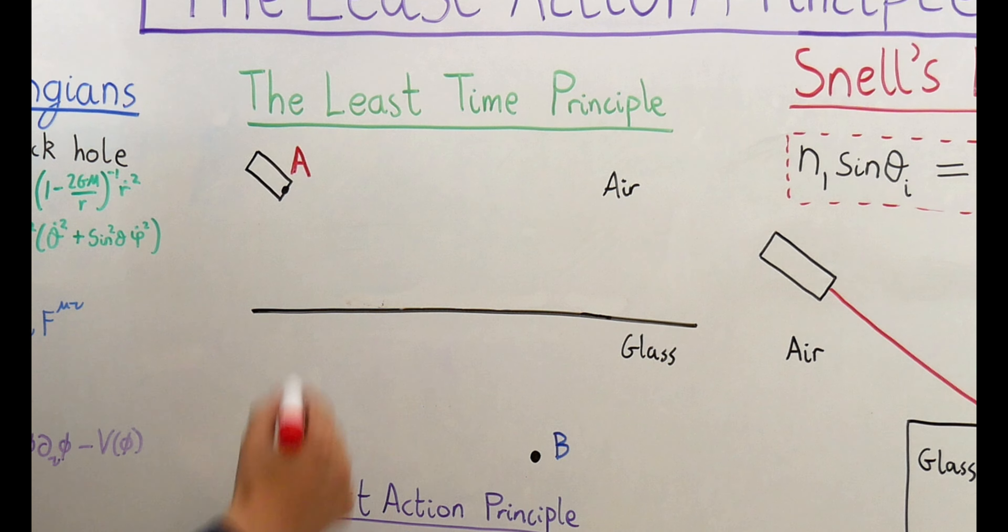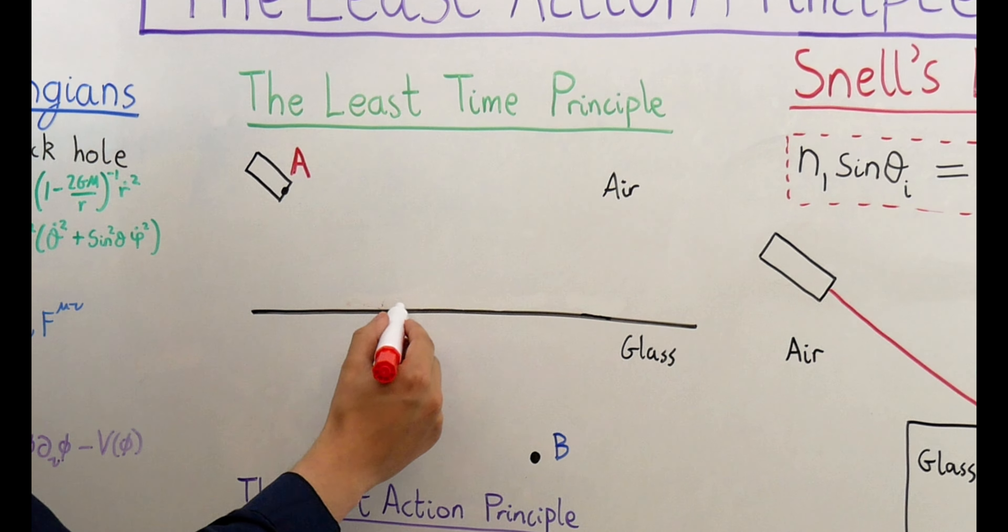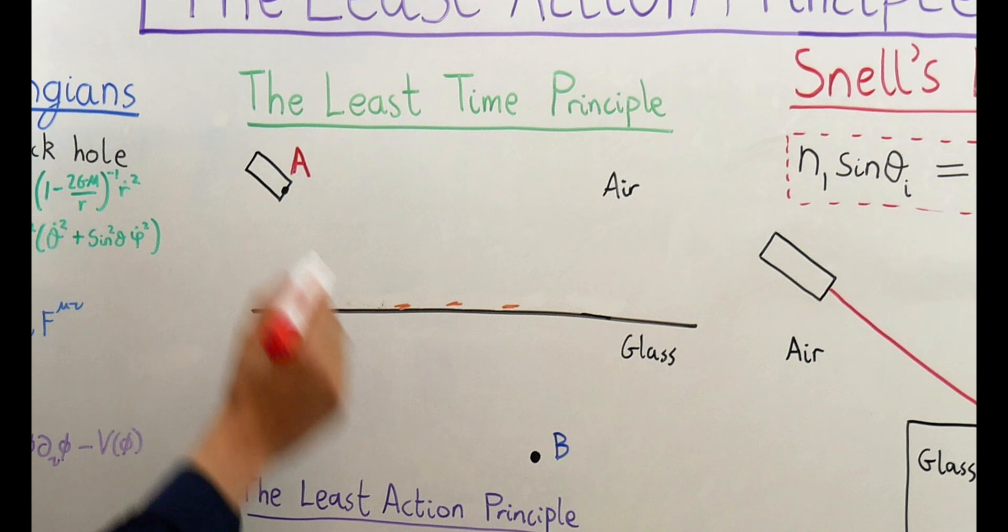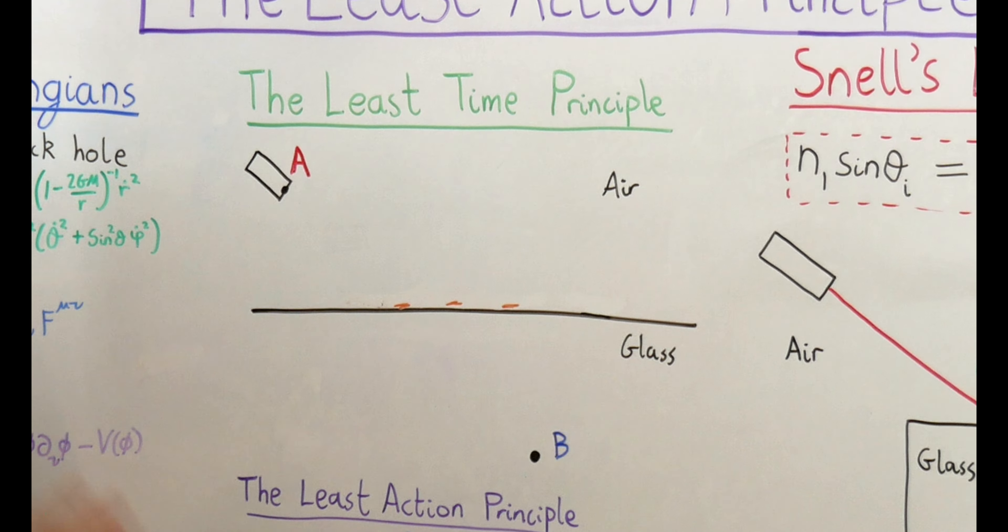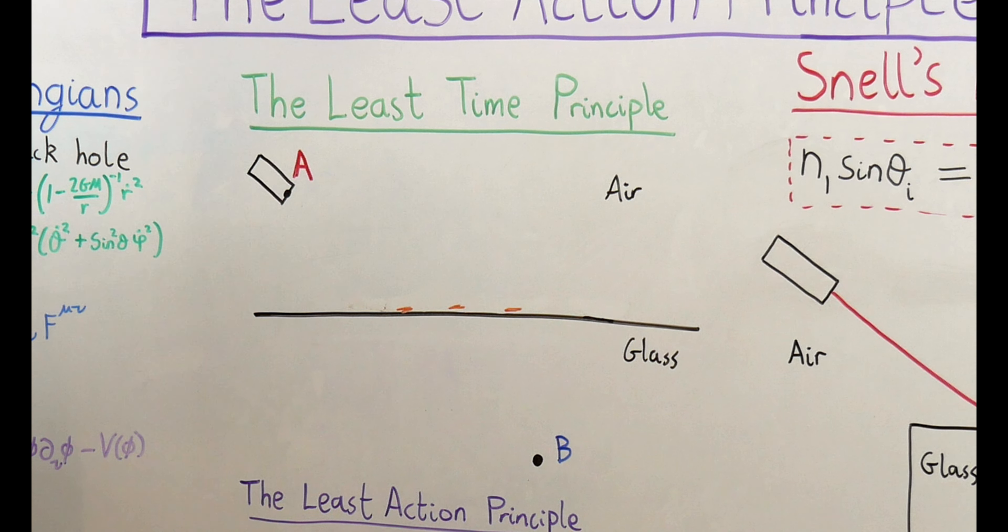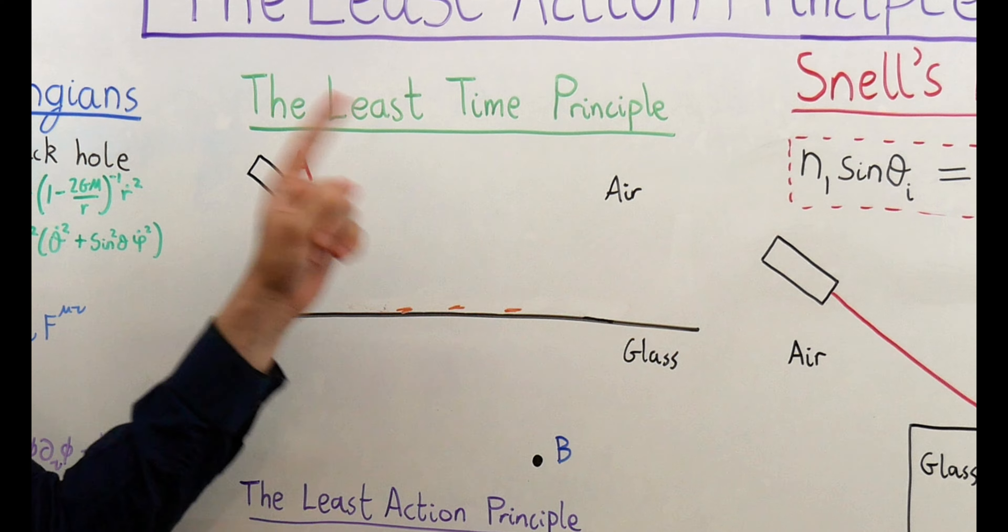An interesting question to ask is where we should put this point along the boundary such that we minimize the total time that it takes for the light ray to travel from A to B. The answer to this is not immediately obvious since it involves a trade-off between two competing effects. Glass has a larger refractive index than air, and so light travels slower in glass than it does in air.